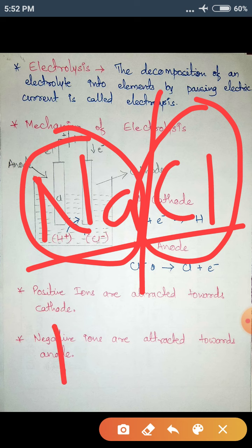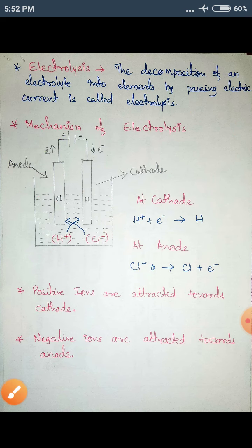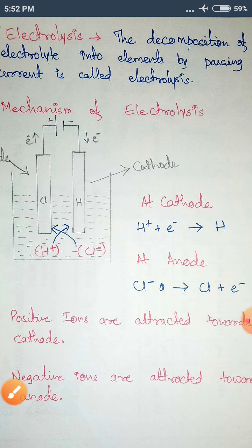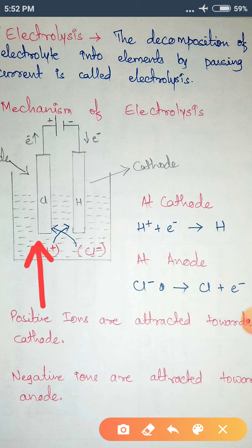I will explain this with the example of HCl. If you look at the diagram, we have a solution of HCl. Everywhere inside this liquid or solution we have H+ ions and Cl- ions.